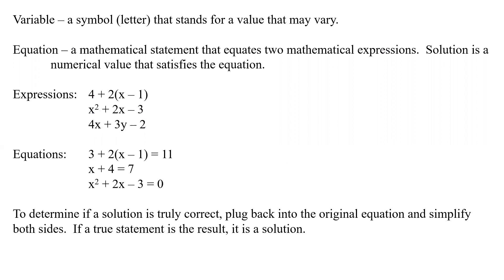To make it an equation, we have to add an equal sign. Once we have an equal sign with an expression on each side — 11, 7, and 0 are all single-term expressions — we can solve those equations for the variable. Once we've solved for that, that's called our solution. To determine if a solution is truly correct, we plug that number back into our original equation, simplify both sides, and if we get a true statement, then it is a solution.